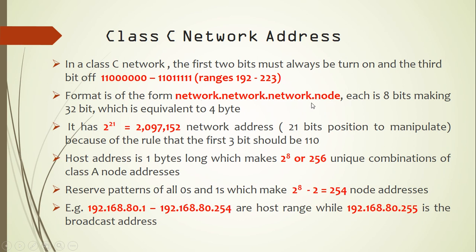For the network address portion: 3 bytes times 8 bits is 24, minus the 3 fixed bits gives 21 bits, so I have 2 to the power of 21 network addresses. Class C has a bigger range of network addresses compared to class A and class B. However, the host address portion is only 8 bits, giving 2 to the power of 8, which is 256 unique combinations. Subtracting 2 for the reserved all-zeros and all-ones patterns gives 254 possible node addresses per class C network.